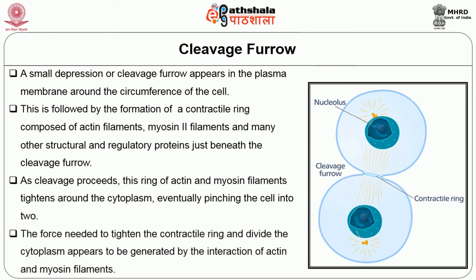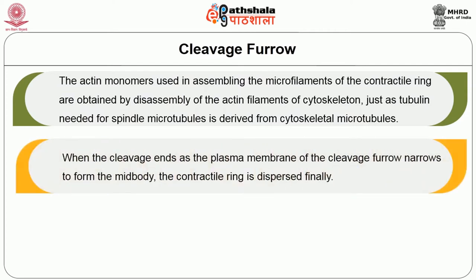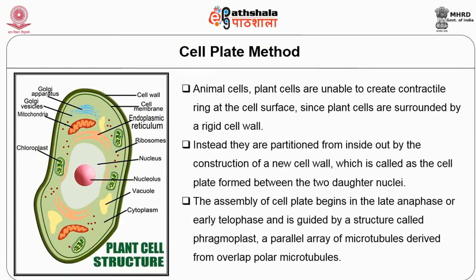As the cleavage proceeds, the ring of actin and myosin filaments tightens around the cytoplasm, eventually pinching the cell into two. The force needed is generated by the interaction of actin and myosin filaments. The actin monomers used in assembling the contractile ring's microfilaments are obtained by disassembly of cytoskeletal actin filaments, just as tubulin for spindle microtubules is derived from cytoskeletal microtubules. When cleavage ends, the plasma membrane narrows to form the midbody and the contractile ring is dispersed. Residual midbody components often remain on the inside of the plasma membrane to help orient the spindle in subsequent cell division.